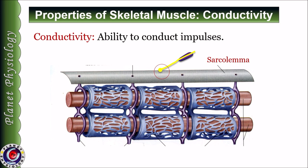Coming to the second property: conductivity. It is the ability of a tissue to conduct impulses. This represents sarcolemma. This is the motor nerve and this is the neuromuscular junction. When signals arrive at the neuromuscular junction from the motor nerve, it initiates impulse generation at the motor end plate, which travels on either side of the muscle as well as deeper into the muscle via the T-tubule system. Thus, skeletal muscle has the ability to conduct impulses. Excitability and conductivity are the electrical properties of the muscle.